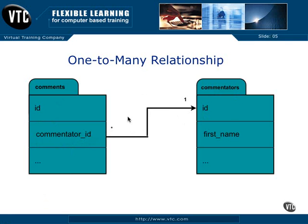Establishing this in the code for your model in Rails is a one-line piece of code. If it was a legacy database and your foreign key was not named following this convention, you can add some code inside your model to make sure it connects. But it's best to follow the convention because then Rails works much better.